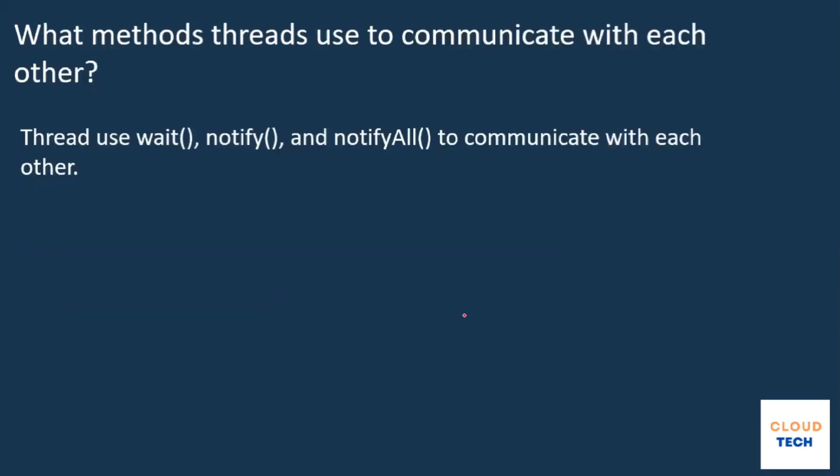The next question is: what methods do threads use to communicate with each other? In your program there are generally multiple threads that want to acquire or release some resources. They use methods like wait(), notify(), and notifyAll() to communicate with each other. Whenever there is a question about thread communication, you should specify wait(), notify(), and notifyAll().